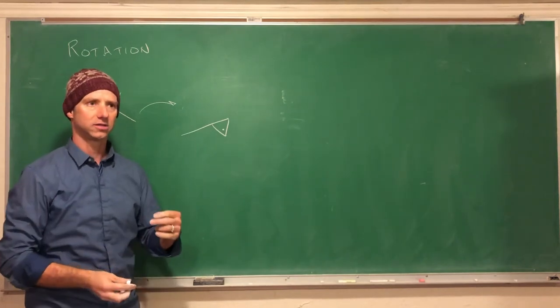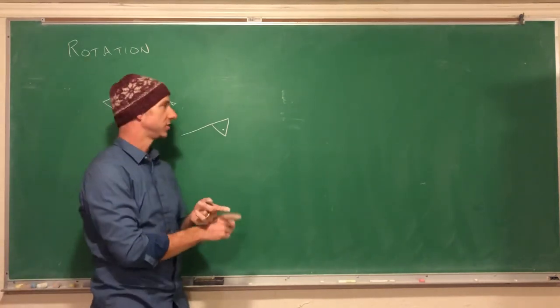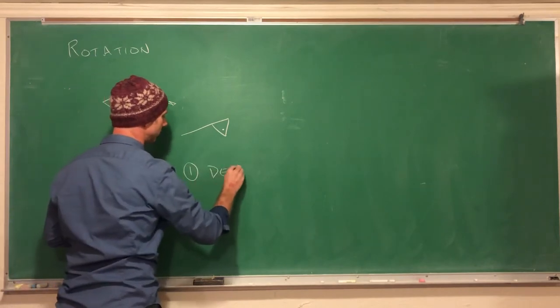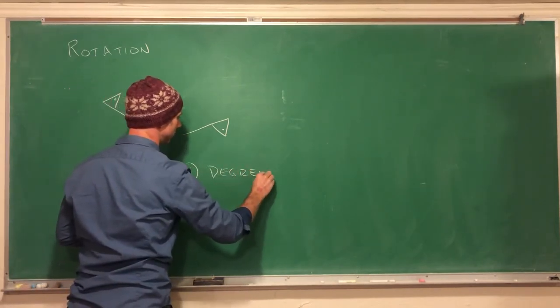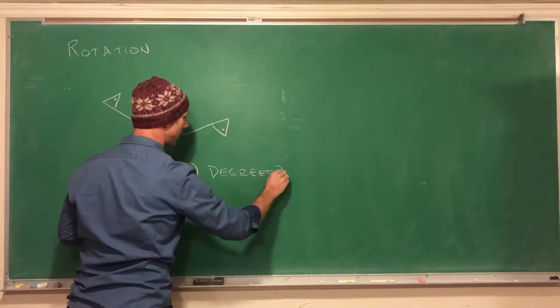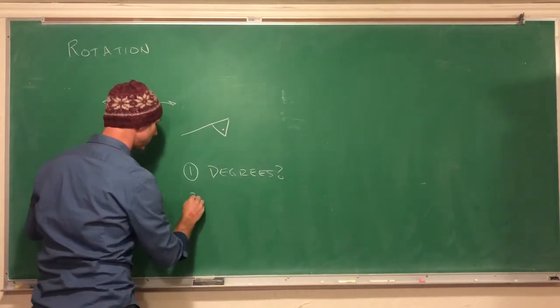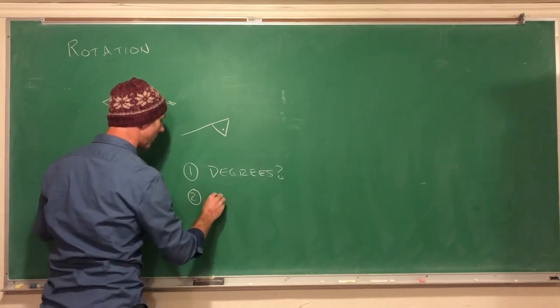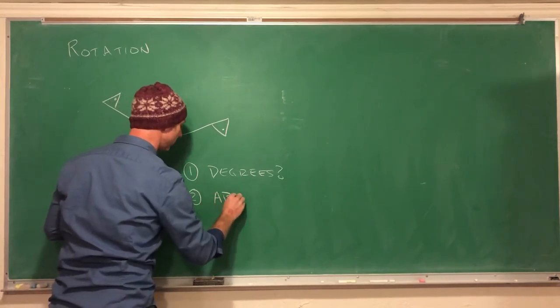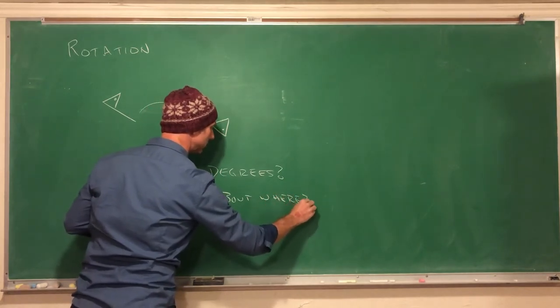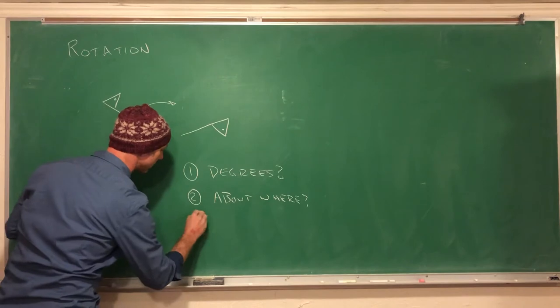First is the angle of the rotation - one is degrees, how many degrees did the object rotate. The next one's going to be about what, about where.